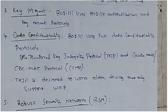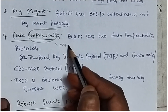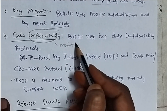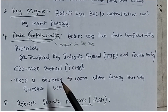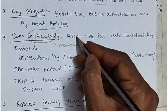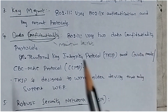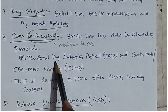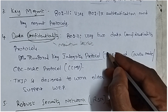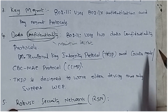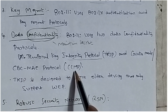The next feature is data confidentiality. Confidentiality means maintaining secret — keeping data private. 802.11i uses two data confidentiality protocols: the first is Temporal Key Integrity Protocol, TKIP, and the second is Counter Mode with CBC-MAC Protocol, known as CCMP.